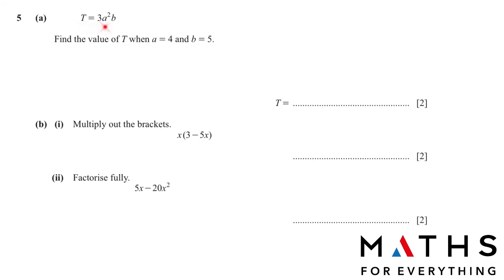Question 5a: T = 3a²b. Find the value of T when a = 4 and b = 5. Super easy two-mark question. We just substitute: 3a² means 3 multiplied by a squared, so put in the bracket 3 × (4²) × 5, which gives 240.